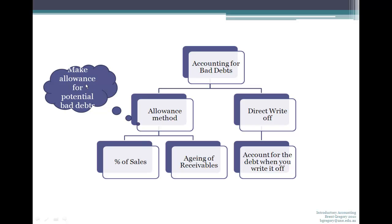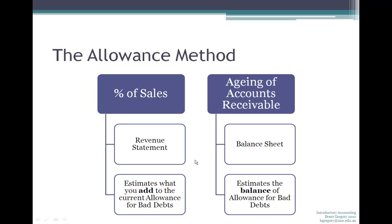With the allowance method, you make an allowance for potential bad debts. This can happen in one of two ways: you can use the percentage of sales method, or you can use the ageing of accounts receivable method. Let's have a look at each of these in a little more detail.